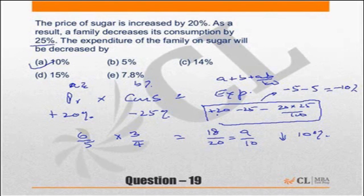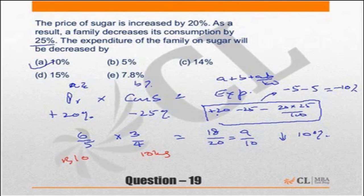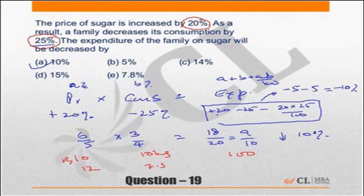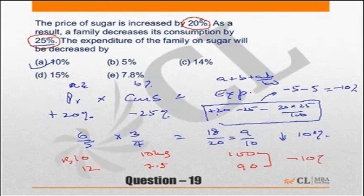Ratio is my personal favorite, but there is a third method. Assume the original price of sugar is 10 rupees and originally 10 kgs was consumed, so expenditure was 100 rupees. Price has become 12 rupees after a 20 percent increase. Consumption decreased by 25 percent to 7.5 kgs, so total expenditure is now 90 rupees — a reduction of 10 percent. Any of these three methods gives the same answer.